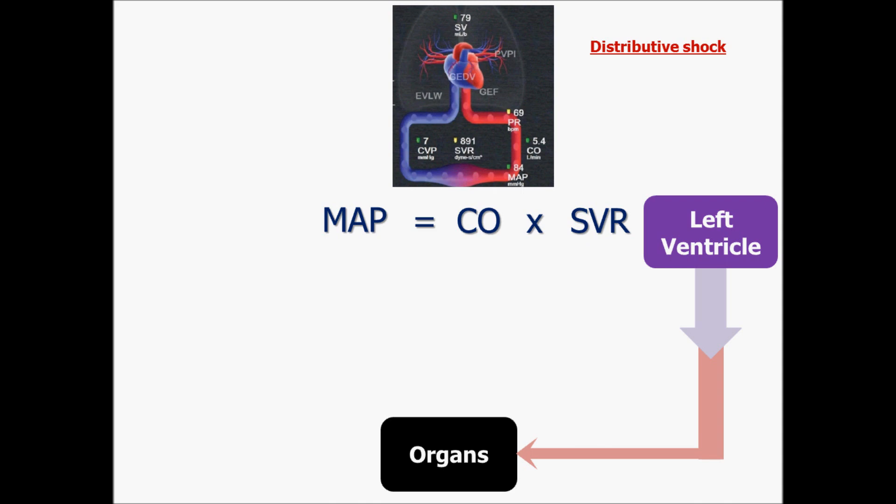Now, distributive shocks are sometimes described as warm shocks. And here's why. Typically in a shock state, adrenaline release causes vasoconstriction at the periphery. And that vasoconstriction results in cold, clammy, pale skin.